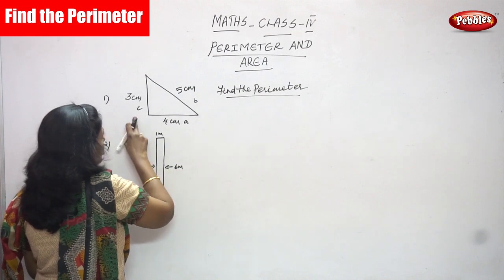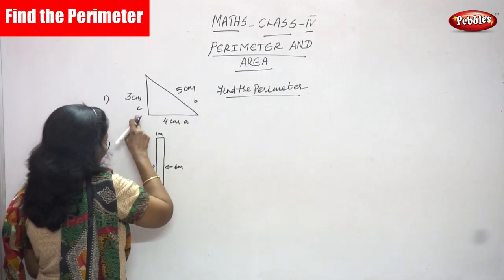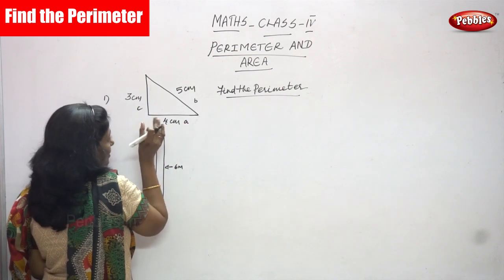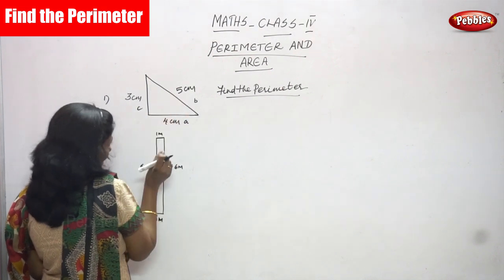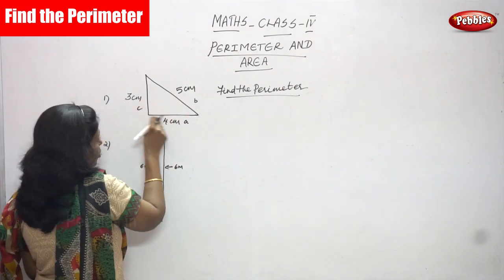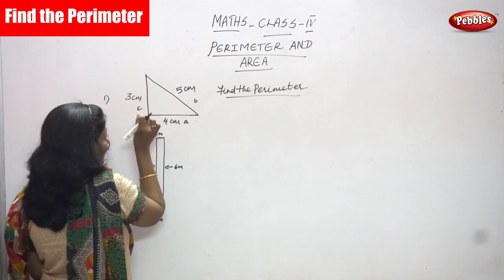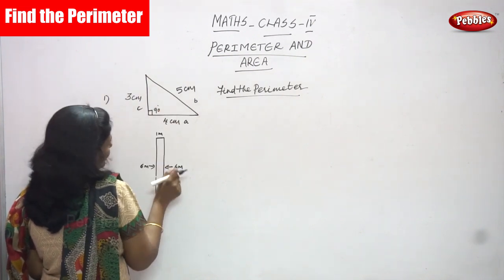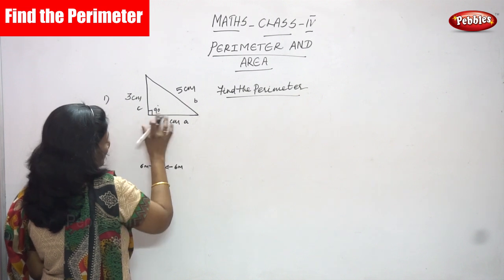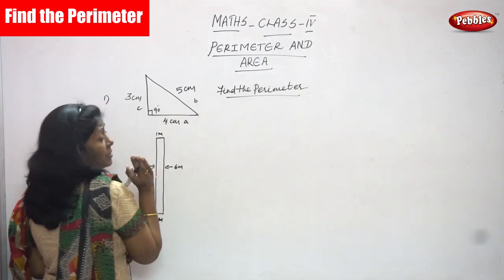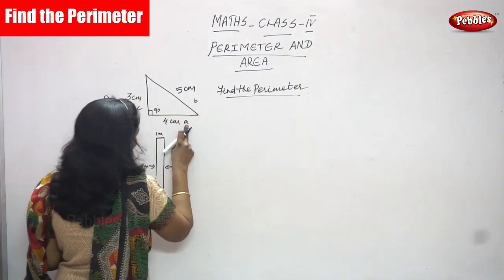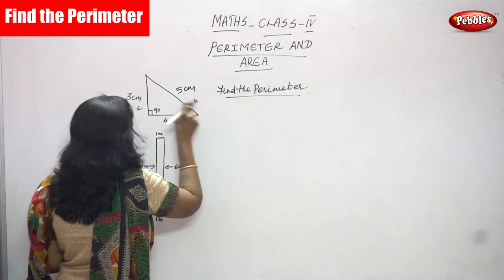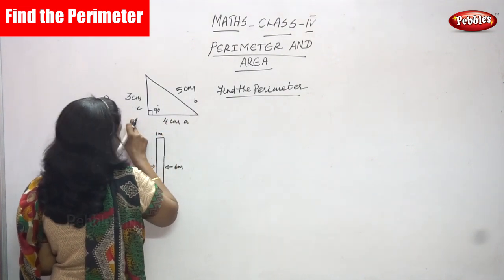This is a right triangle — it is a triangle, but specifically a right triangle because it has a 90-degree angle. A triangle has three sides. The value of a is equal to four centimeters, the value of b is equal to five centimeters, and the value of c is equal to three centimeters.